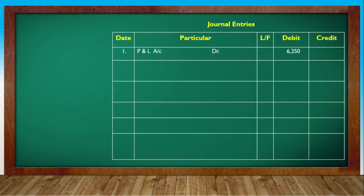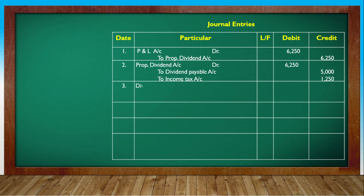Entry one - P&L Account debit to Proposed Dividend (total tax included). Entry two - Proposed Dividend debit, to Dividend Payable and to Income Tax Payable. Entry three - payment: Dividend Payable and Income Tax to Bank Account.